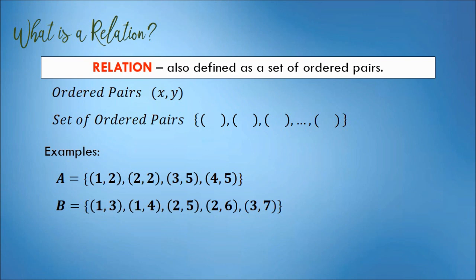One more example, we have a set of ordered pairs C. C is equal to: 1 comma 3, 2 comma 6, 3 comma 9, 4 comma 12, and 5 comma 15, separated by commas, enclosed in a pair of braces. The set represents or shows a relation.